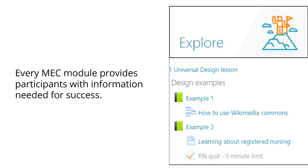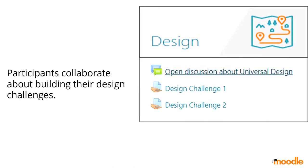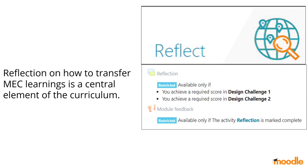The next section is an explore section where participants interact with the content — for example, why is universal design important and what are some of the theories behind it? It's not an exhaustive treatment, but enough to get somebody familiar with why this learning outcome matters. We provide a book of how to build that example and an example of how to do it in Moodle — not how you must do it, but how you could. The design section lets participants collaborate with one another and with their facilitators, then submit the design challenge. The final reflection section asks participants to consider how to transfer that knowledge and provide feedback to Moodle.